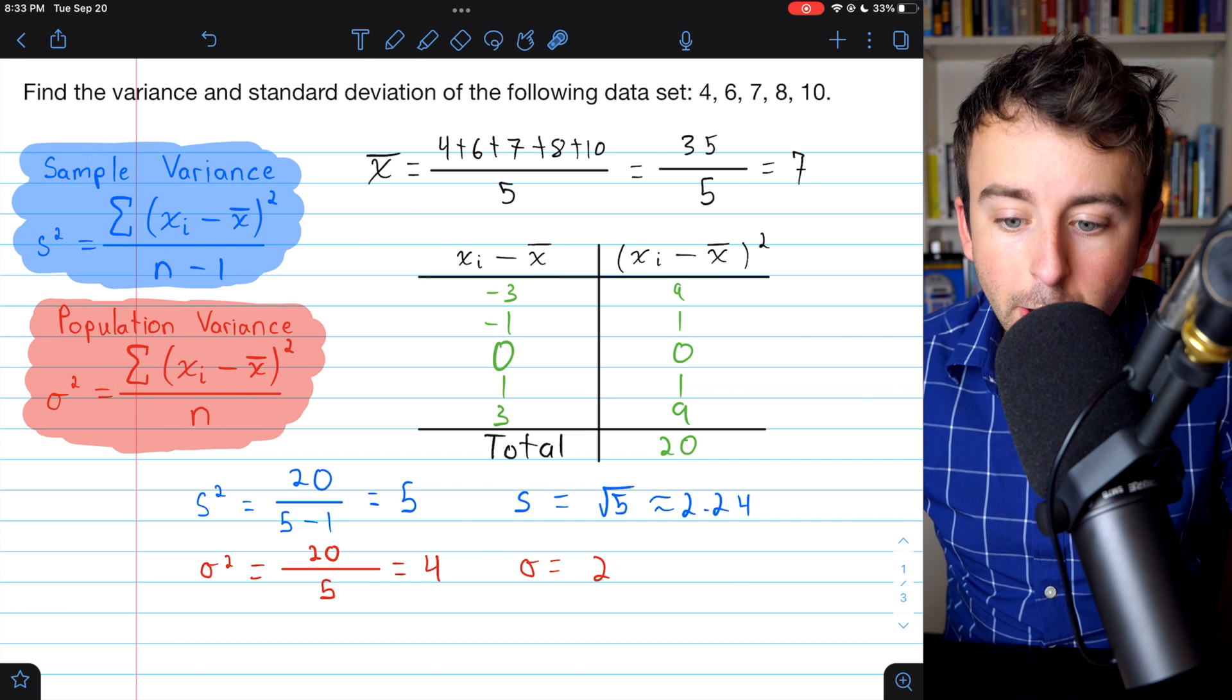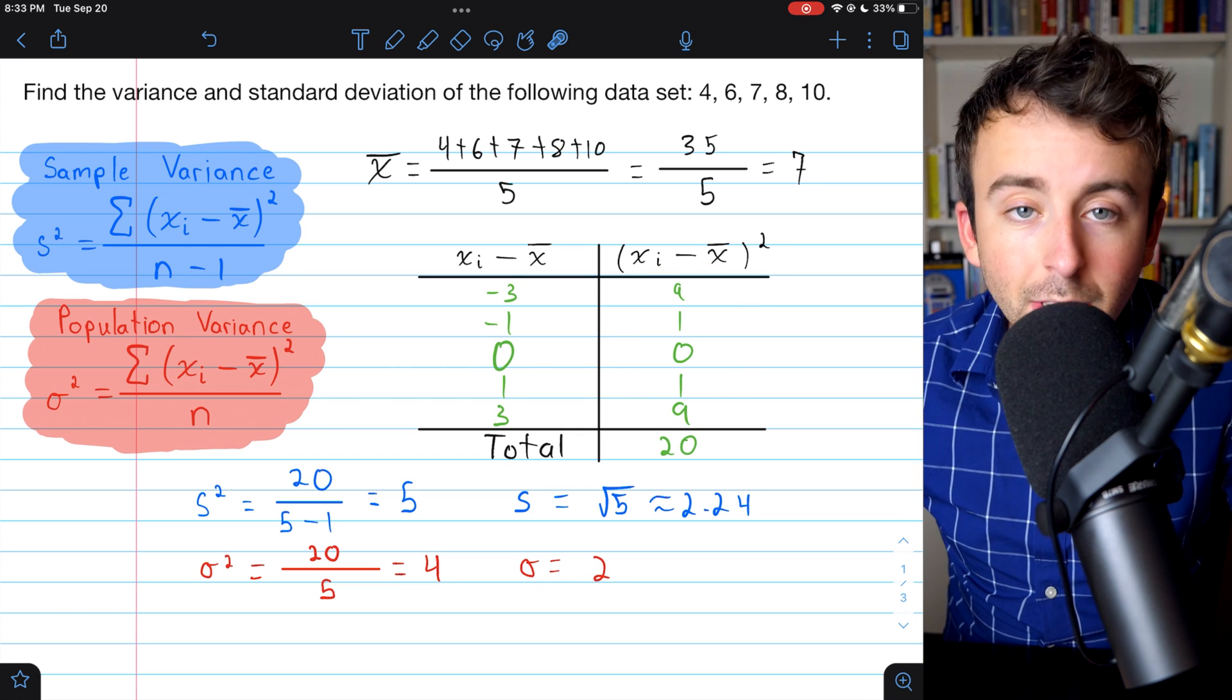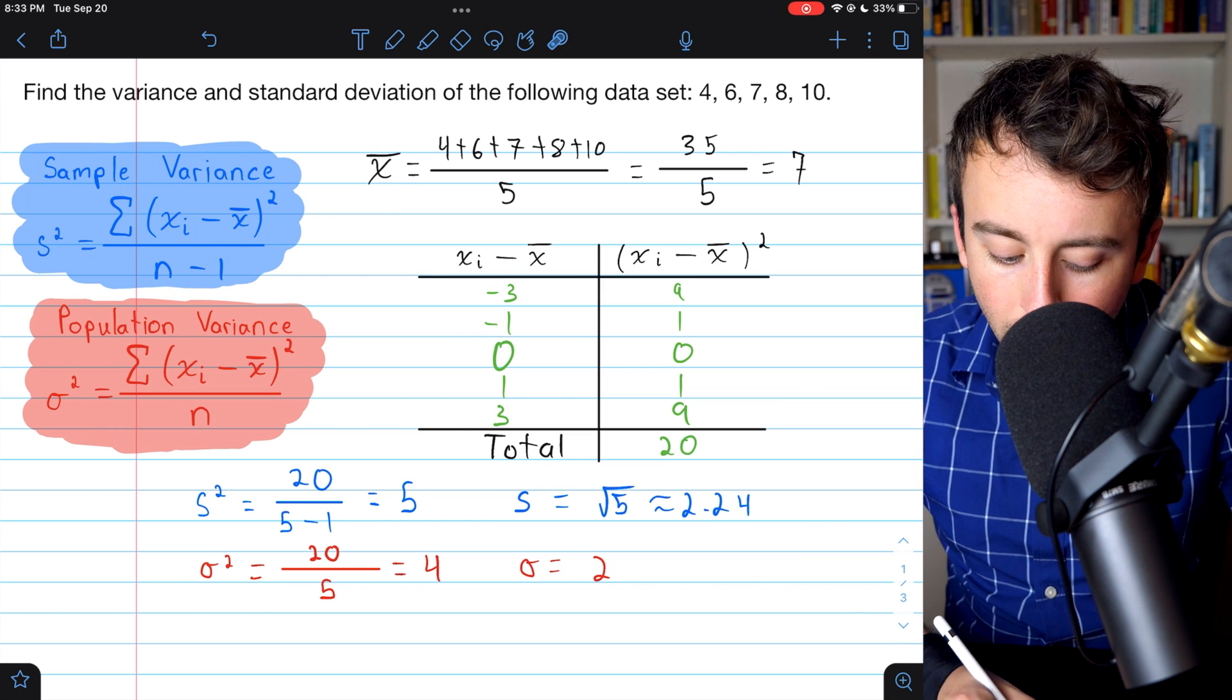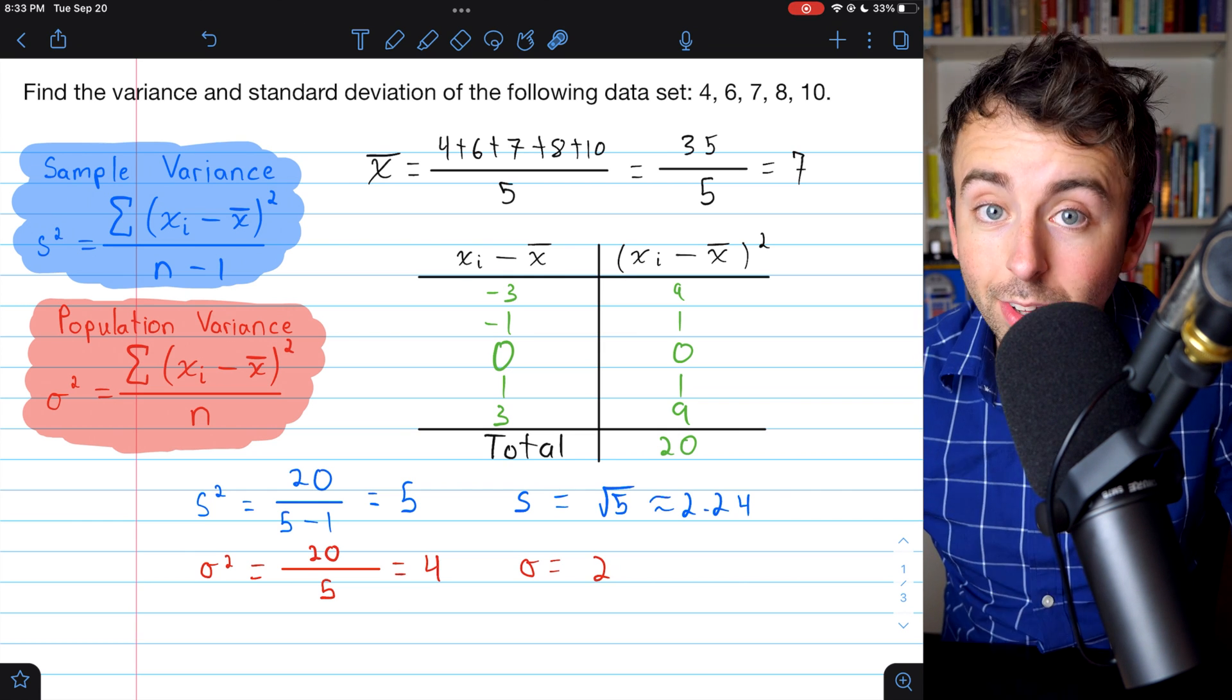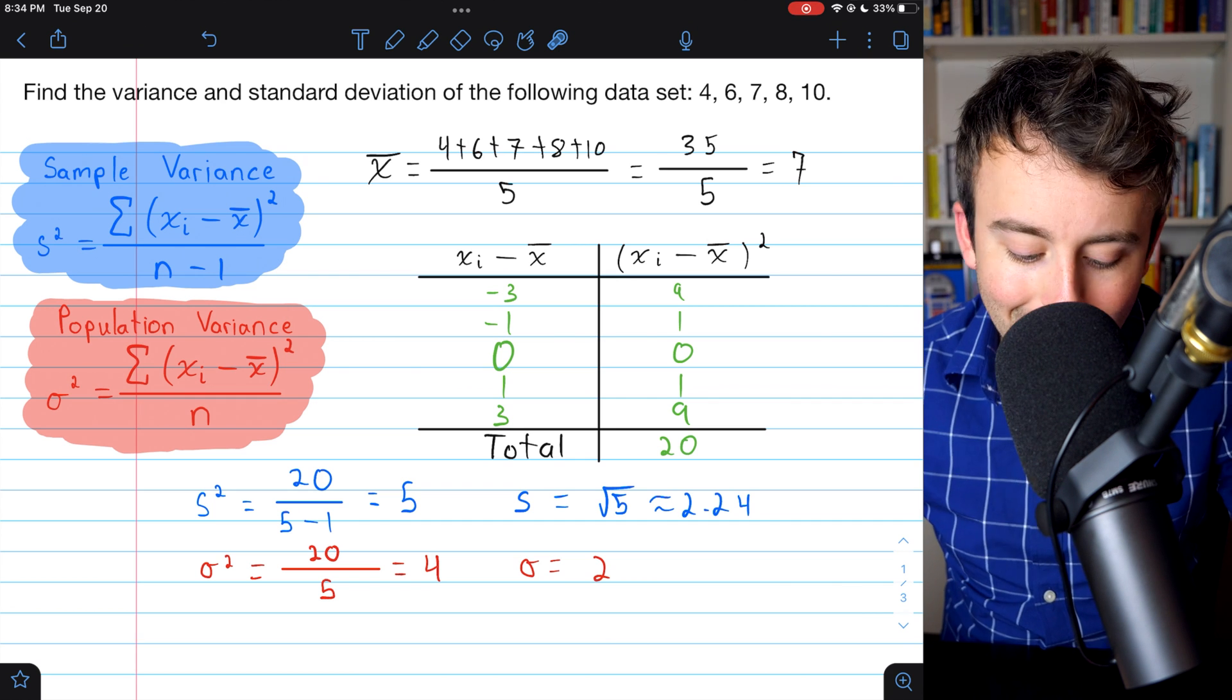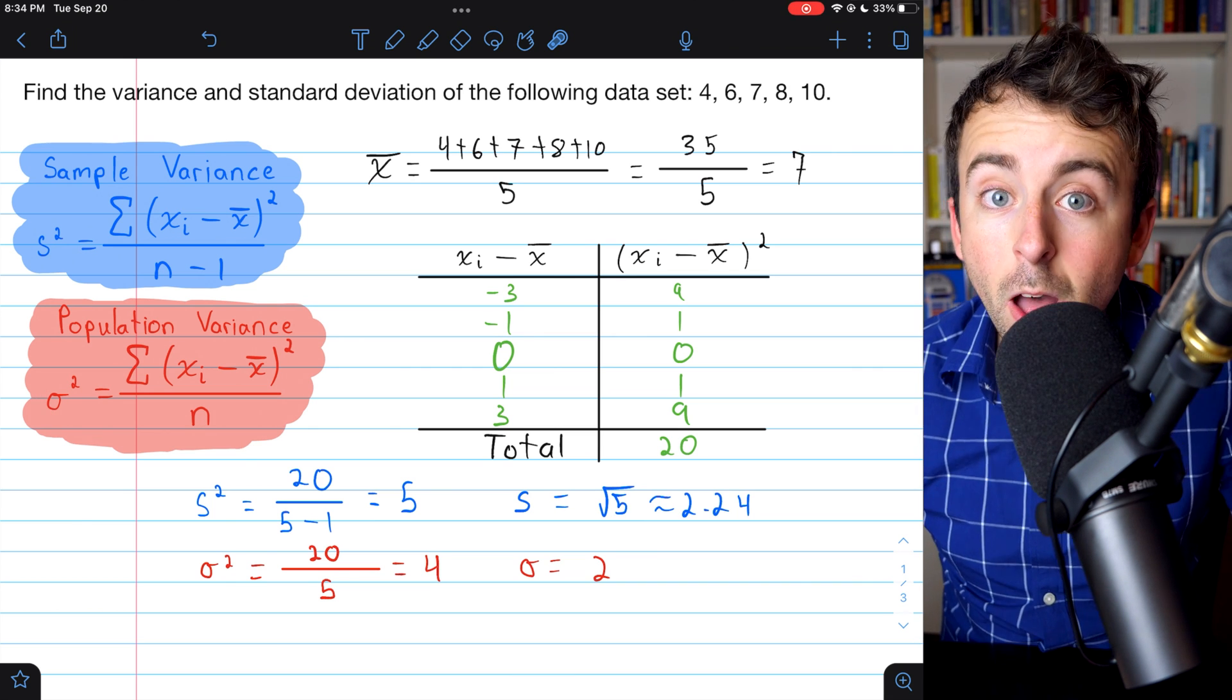So that's it. To calculate variance, we need to find the mean. Then we need to take each data point and subtract the mean, then square those differences, then add them up and divide that by n minus 1 for sample variance or n for population variance. Once you have variance, take the square root of that for the standard deviation. Standard deviation is the square root of the variance. That's why the symbol for variance is an S squared. That's standard deviation squared or sigma squared. Same idea.